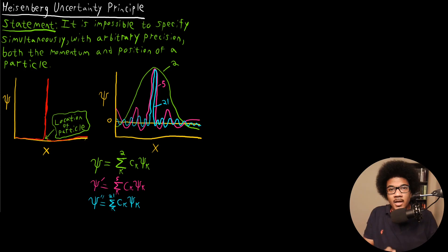In this video, we're going to introduce the Heisenberg Uncertainty Principle. The Uncertainty Principle is one of the most important consequences of quantum mechanics, one of its greatest discoveries.